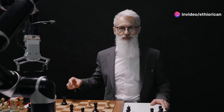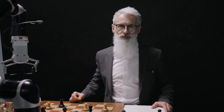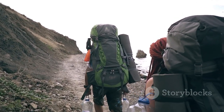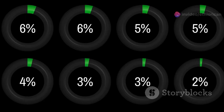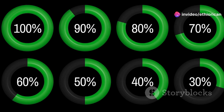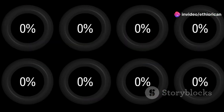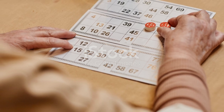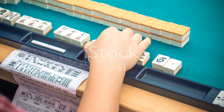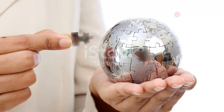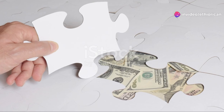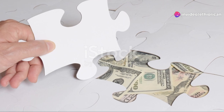The current state refers to the solution that the algorithm is currently considering. It acts as the starting point for exploring neighboring solutions. As the algorithm progresses, the current state is updated to reflect the best solution found so far. Neighboring states are solutions that are directly reachable from the current state by making a single change. For example, in the 8-puzzle, moving a tile to an adjacent empty space creates a neighboring state.